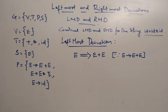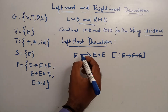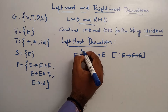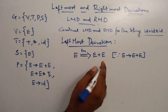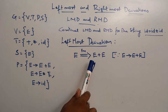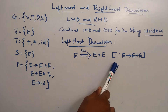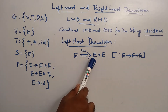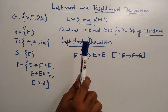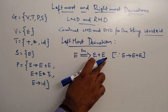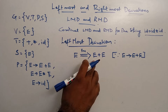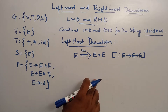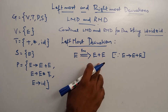Okay, and this is the same generation. So leftmost derivation — on the right side there are non-terminals. Leftmost is E, rightmost is E. So in leftmost derivation we select all the leftmost non-terminal values.